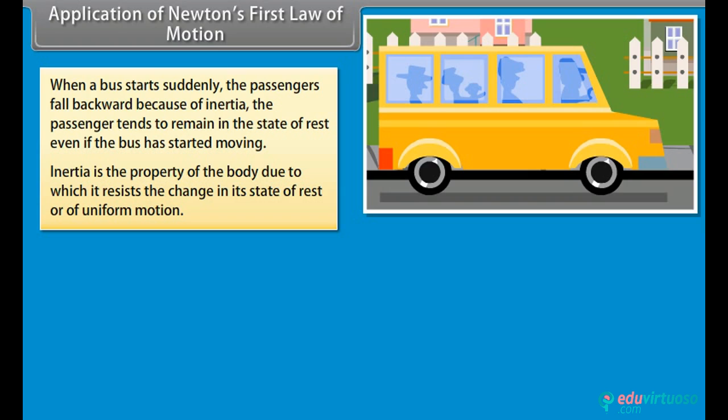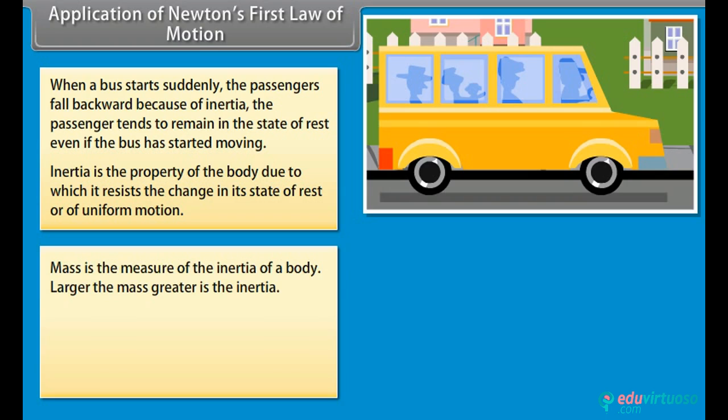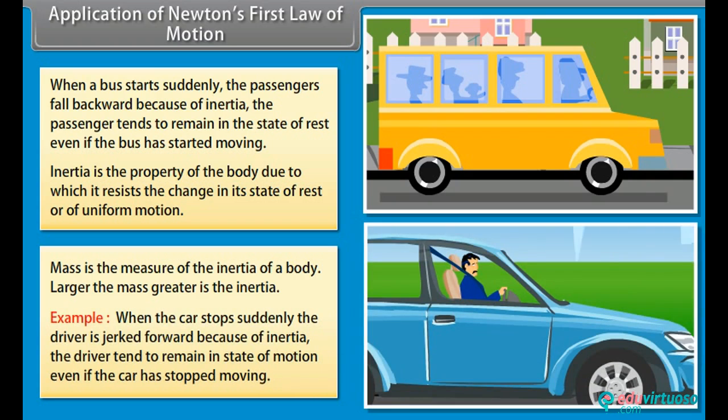Mass is the measure of the inertia of a body. Larger the mass, greater is the inertia. Example: when the car stops suddenly, the driver is jerked forward because of inertia. The driver tends to remain in the state of motion even if the car has stopped moving.